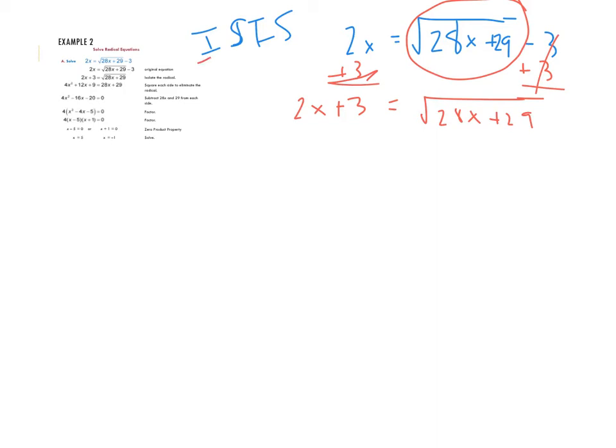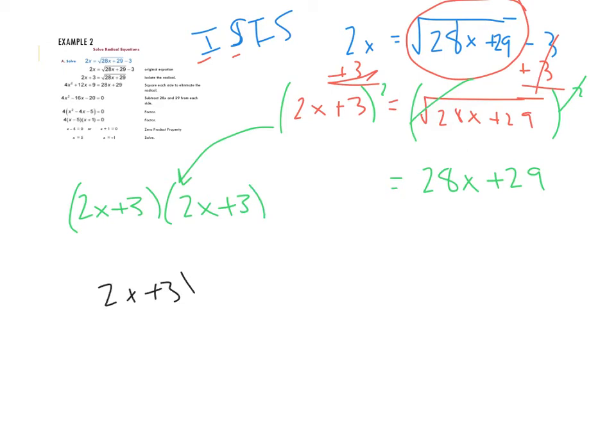So we're done with isolating the first variable. The next thing we need to do is square both sides. So I'm going to square this side, and I'm going to square this side. The reason why we're squaring both sides is this square and this square root will cancel, and I'm left with 28x plus 29. Now, when you're doing the 2x plus 3 squared, remember, that is 2x plus 3 times 2x plus 3. It is not 4x squared plus 9. Don't do that. Lots of people do that. But no, bad. Do not do that. Whenever you're squaring, make sure you are distributing them.